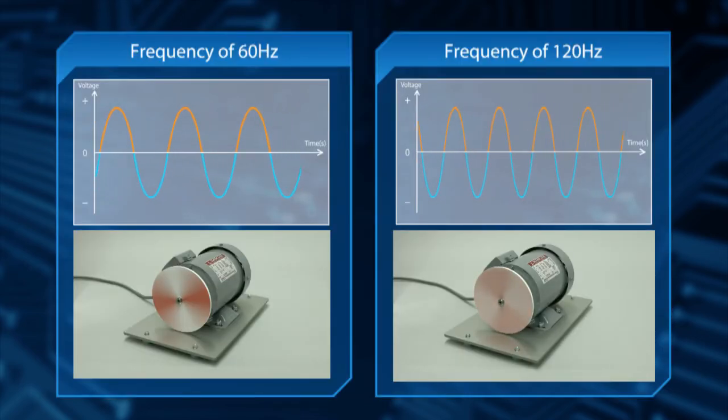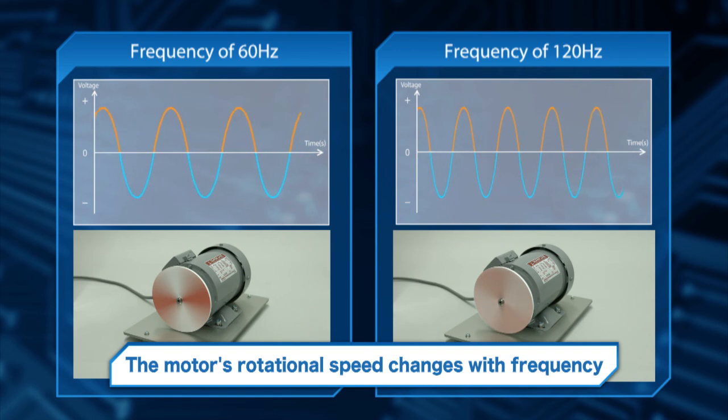When the frequency is 120 hertz, there are 120 waves per second, and the motor rotates twice as fast as it does at 60 hertz. An inverter is a device that controls the motor rotational speed by changing the frequency.